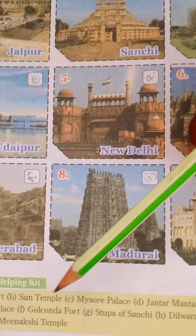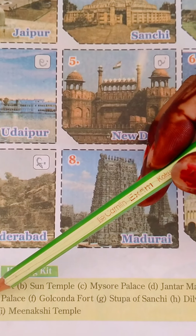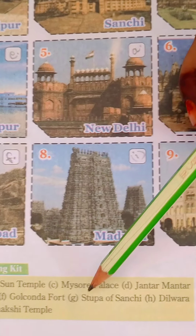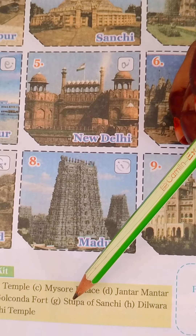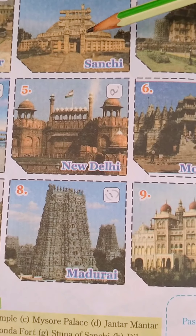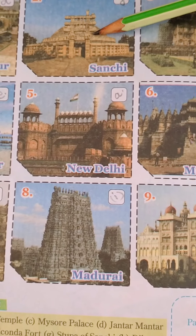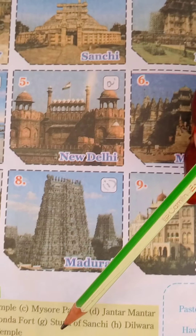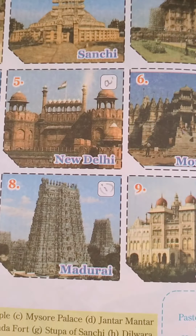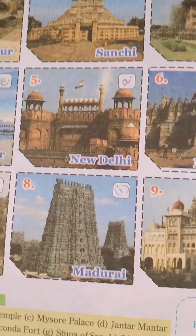Sanchi. This is the Stupa of Sanchi. I wrote the letter G here for number 2.